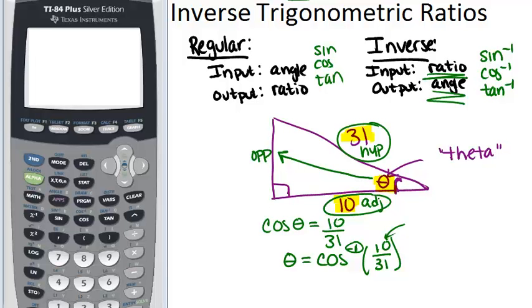So on the calculator, look for the cosine button, and usually right above that will be the cosine inverse. Right here, it's in blue. So you have to push the second button often. And now we can see cosine with a little negative 1. And then in the parentheses, we're going to do 10 divided by 31, close the parentheses and push enter. And we get an answer, 71.18.